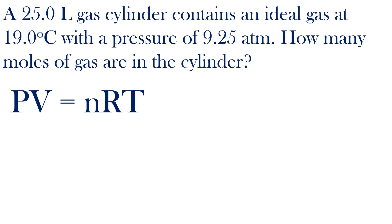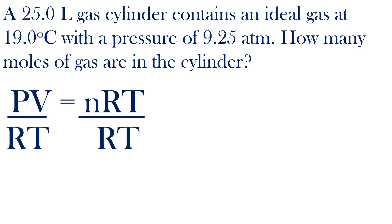I'll divide both sides by the gas constant and temperature to get the moles by itself on the right side. n, the number of moles, is equal to the pressure times the volume divided by the gas constant times the temperature in Kelvin.